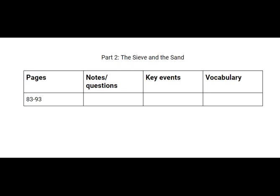We are going to go ahead and get started with Part 2 of Fahrenheit 451 — 'The Sieve and the Sand.' The part we're going to do today is pages 83 through 93, so we're going to do 10 pages. We wanted to keep the parts separate, so we've set up a separate table. We want to do it completely separate to separate out Parts 1 and 2.